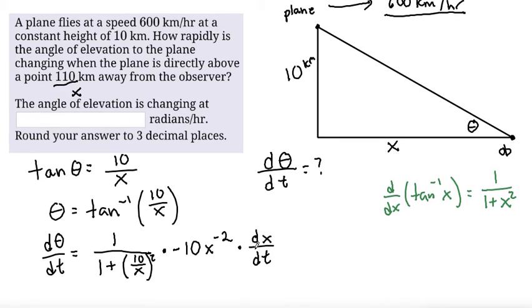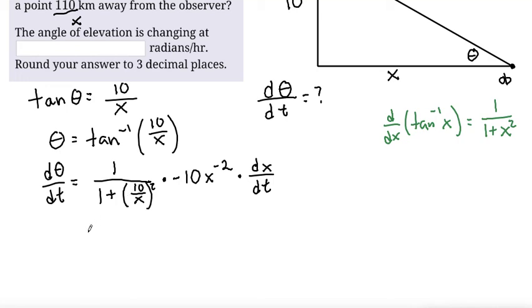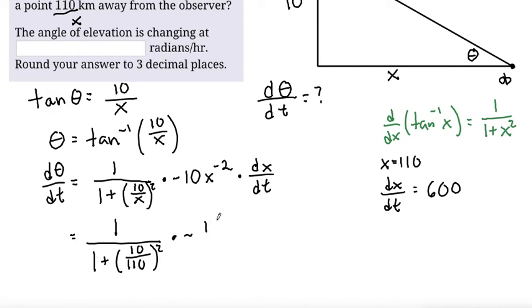Let me give myself a little bit of room. So plugging these numbers in, again, x equals 110 and dx/dt equals 600. So plugging in those numbers, we get 1 over 1 plus 10 over 110 squared times negative 10 over 110 squared times our dx/dt which is 600.